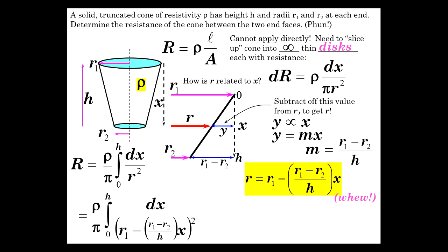And that is R, which is r1 minus r2 over h, times x, quantity squared. So there's our complexity in this problem.